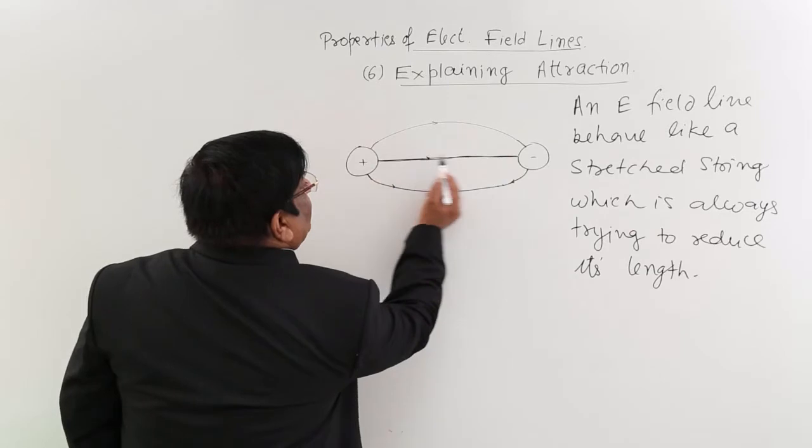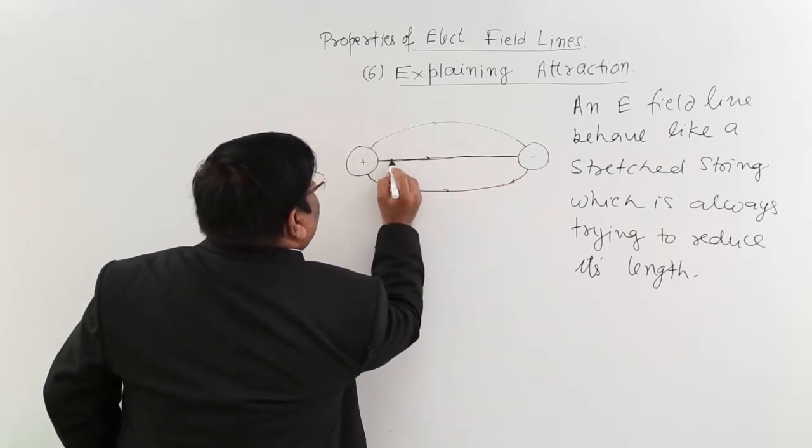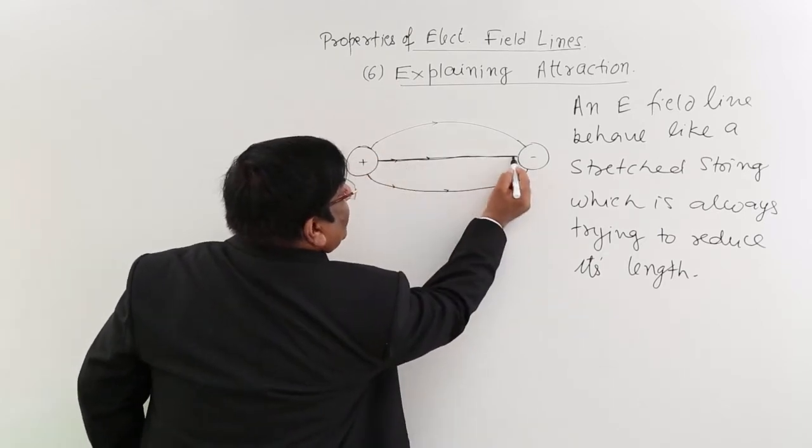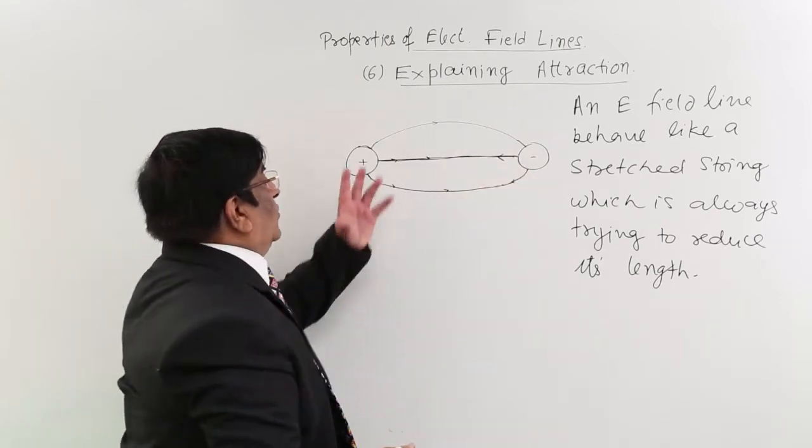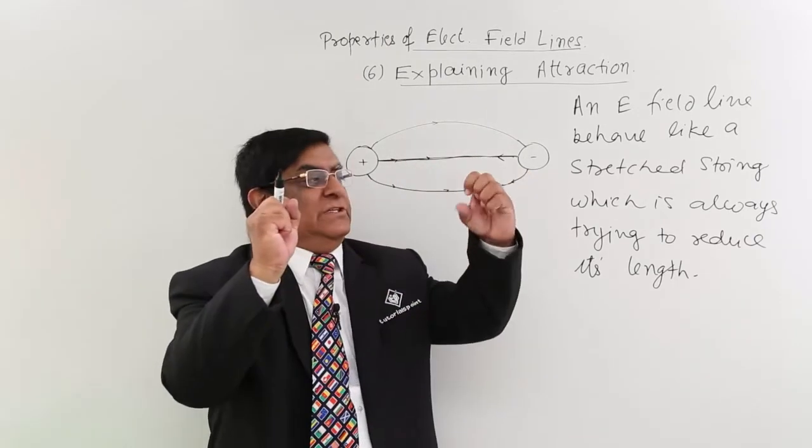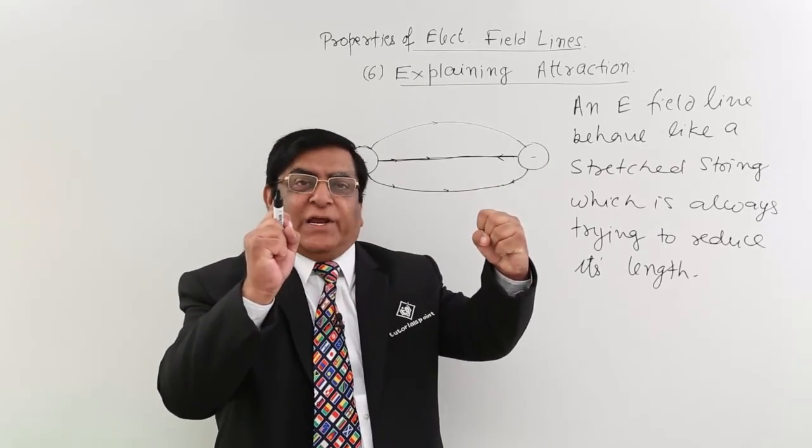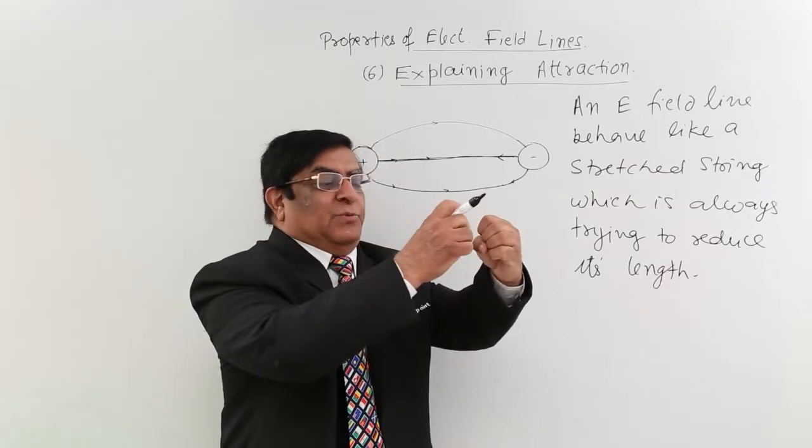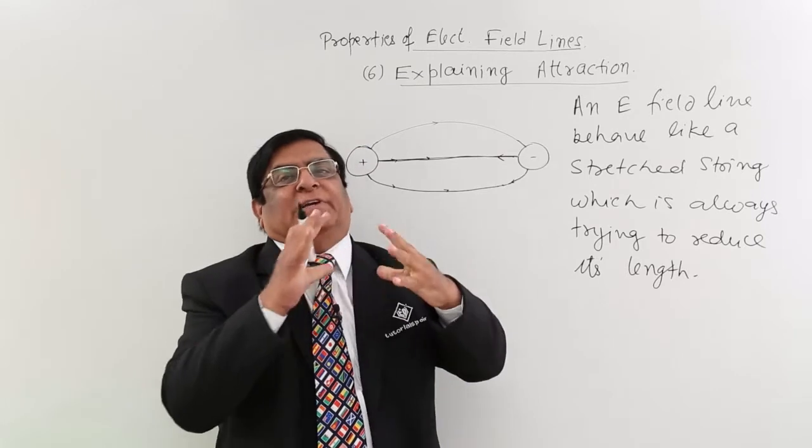If this is trying to reduce its length, what will it do? This will push this body in this direction and from here push this body in this direction. So if this is plus, this is minus. Here is a straight line - an electric field line trying to reduce its length. So it is pulling this way and pulling this way. What is this known as? This is known as the force of attraction.